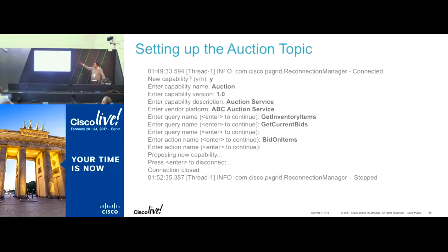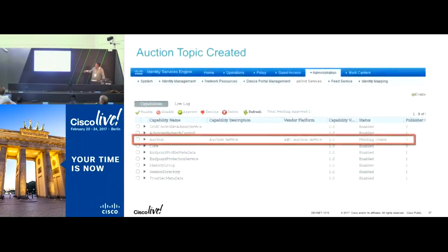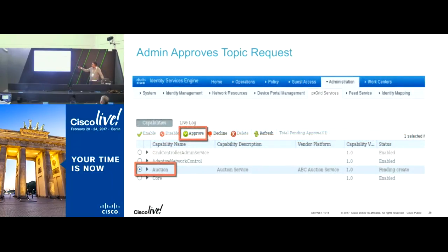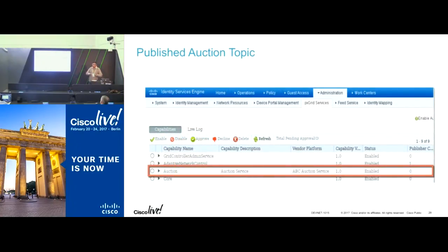Running through how the topic gets created: programmatically you specify the topic name, the APIs, and the actions you intend to take. Once the topic programmatically gets pushed by the publisher, the topic becomes available for approval. There is a pending approval status — the topic becomes available on the ISE policy administration node for an administrator to approve. Once the administrator approves the topic, it becomes available for the entire PXGrid network and is discovered by the subscribers participating on PXGrid.